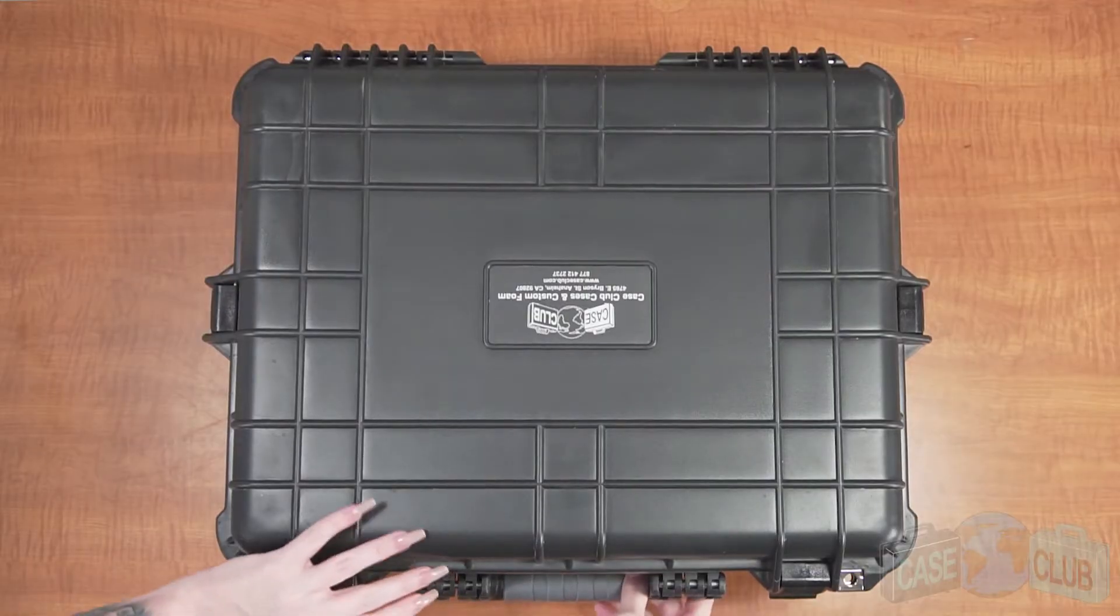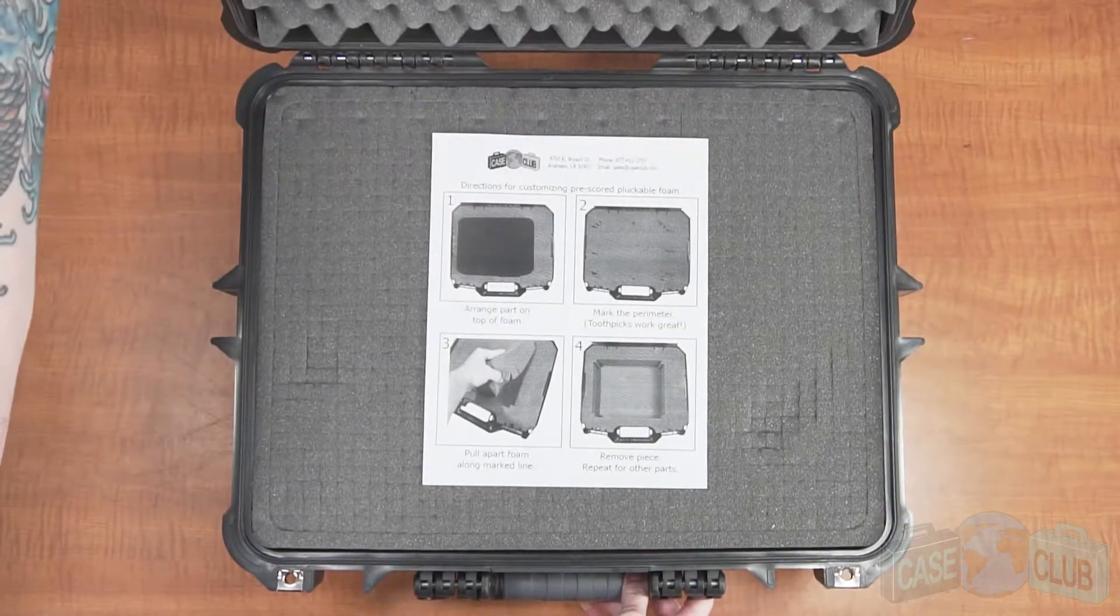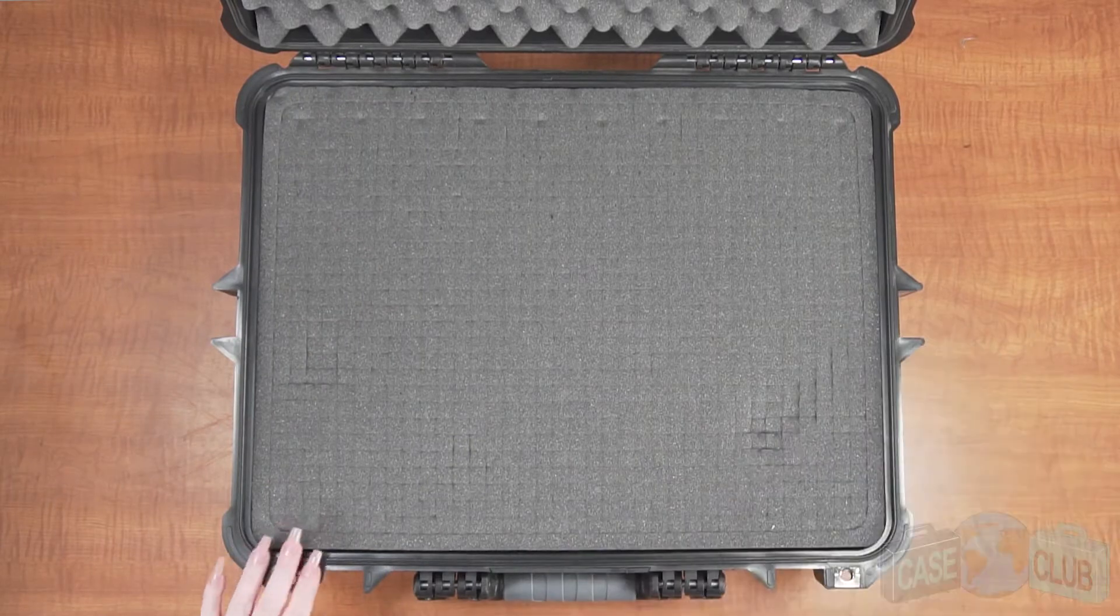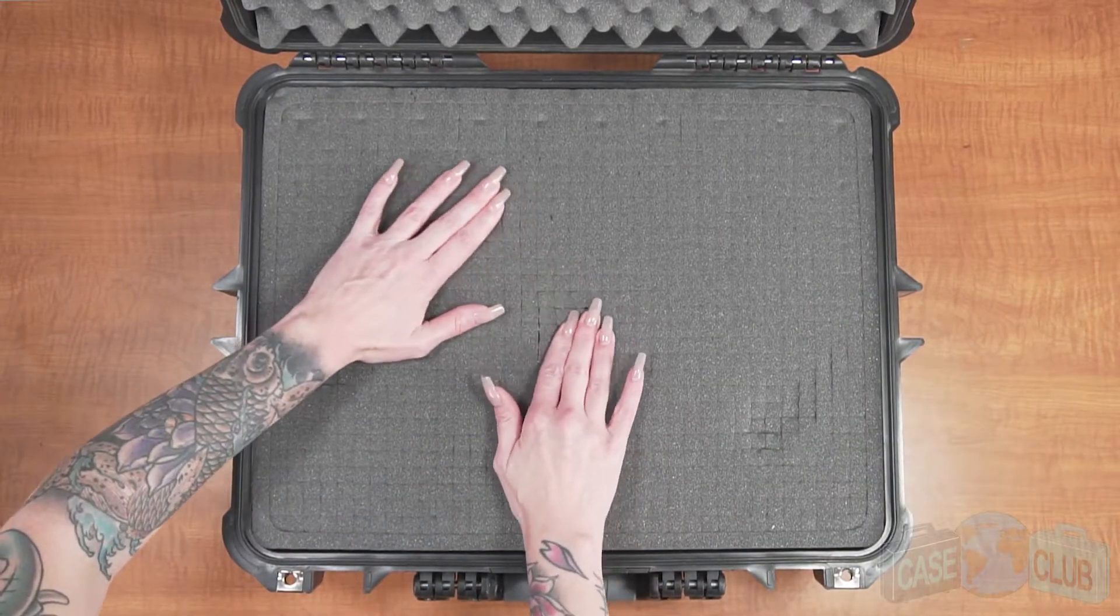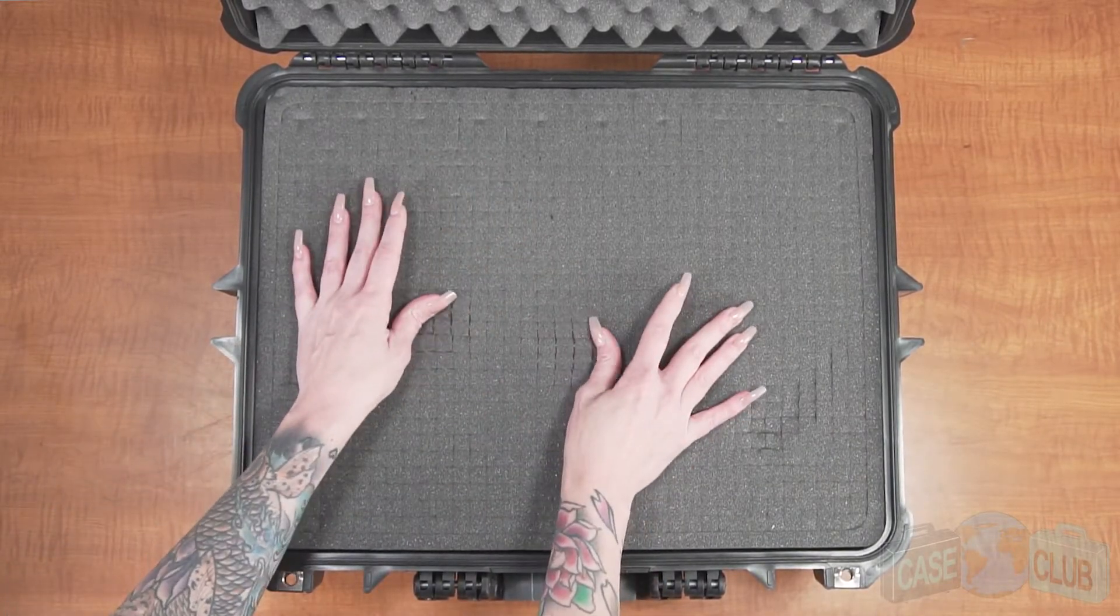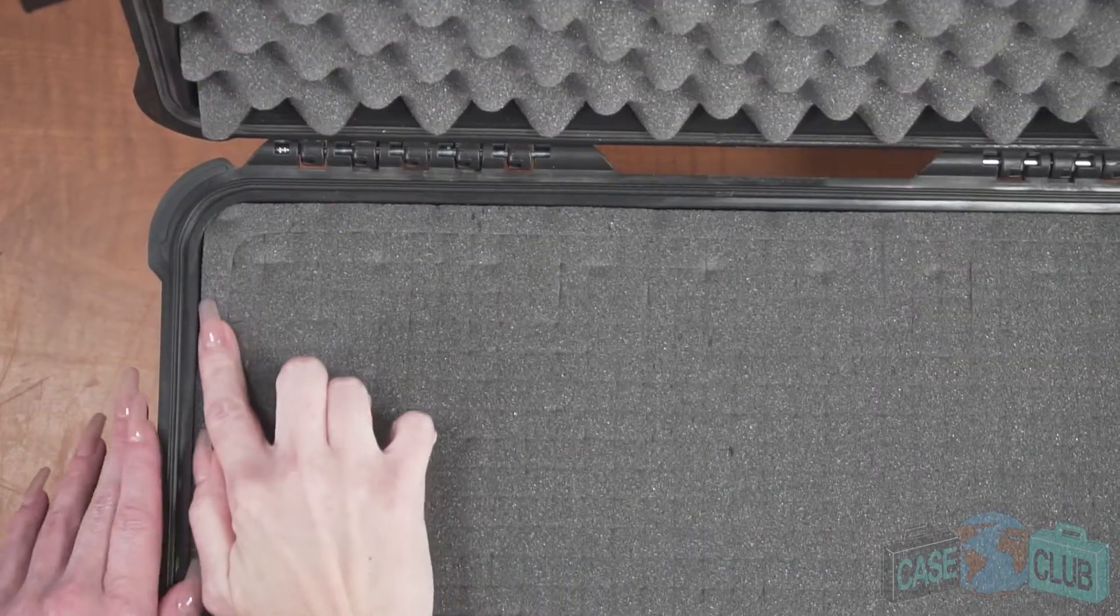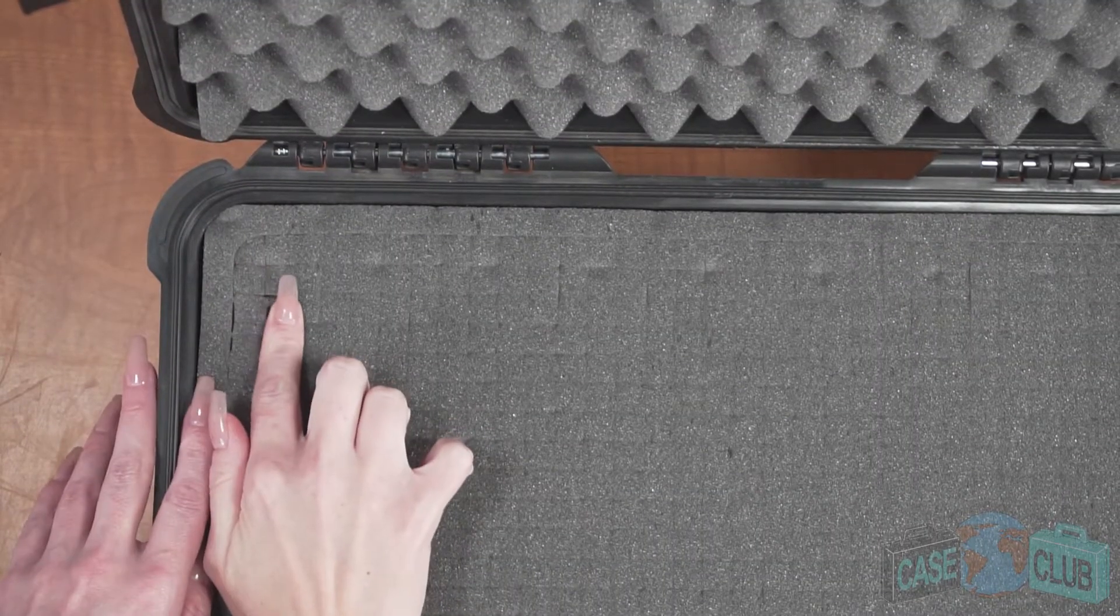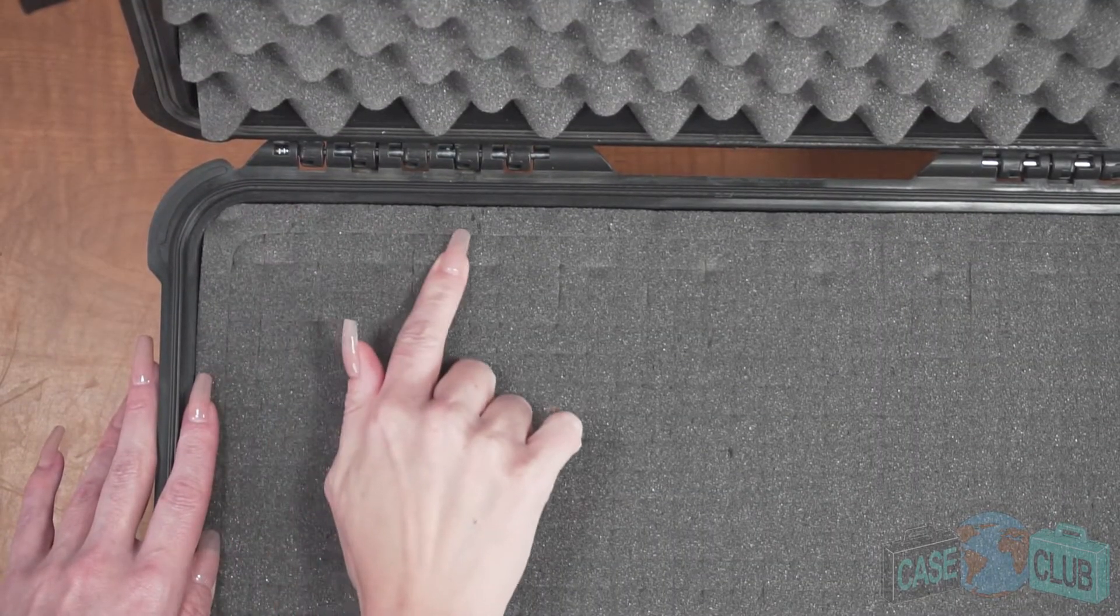When your case arrives, you'll notice that it is filled with an open-cell pre-scored pluckable polyurethane foam that is made to be non-abrasive. The soft texture will ensure your console won't be scratched. This foam is pre-scored in a grid pattern to help you quickly and easily customize your case without any special tools or equipment.